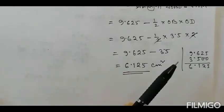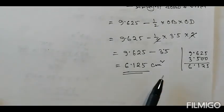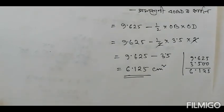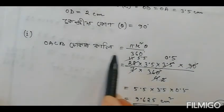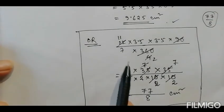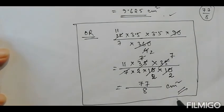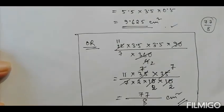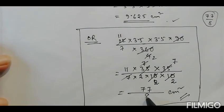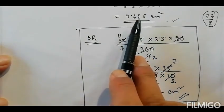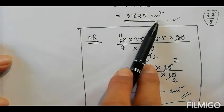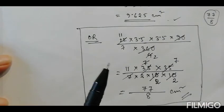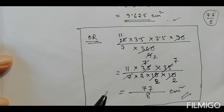So 59 by 8, the result is 6.125. The area of OACP is 9.625 as we calculated, and the final answer for the shaded region is 6.125 cm². This is 77 by 8 divided by 8, giving us 9.625.